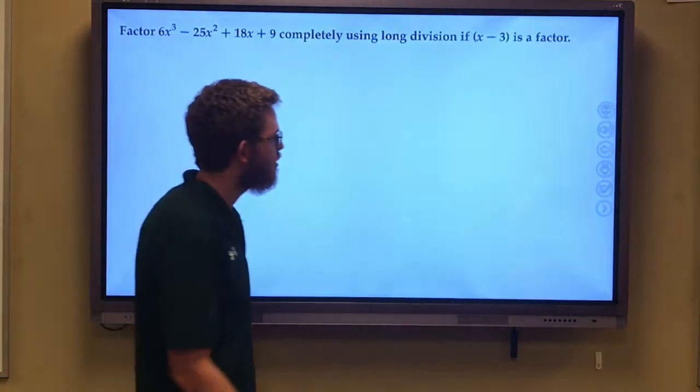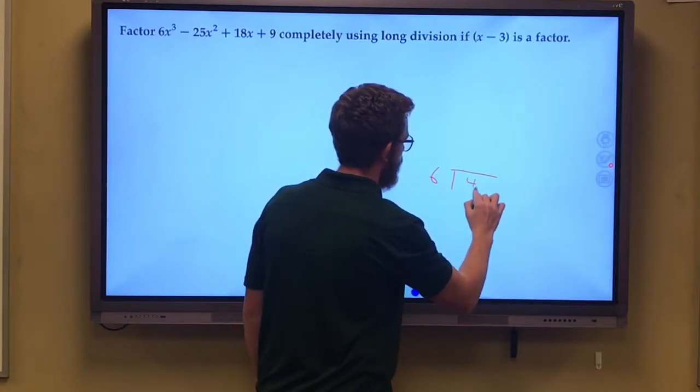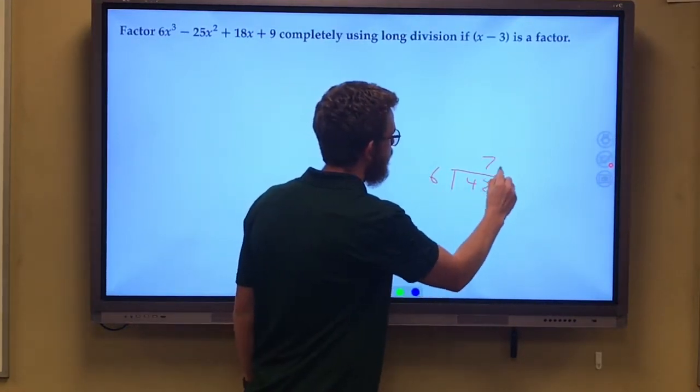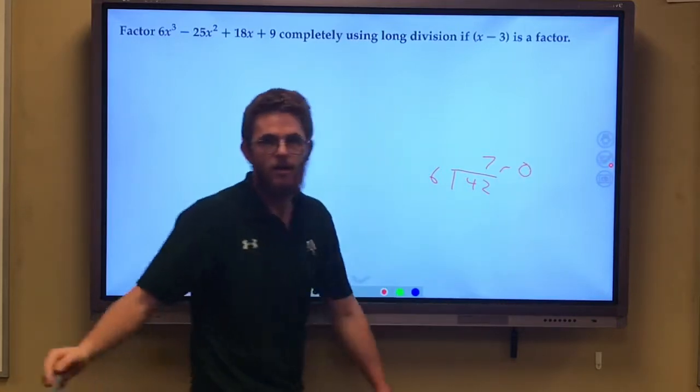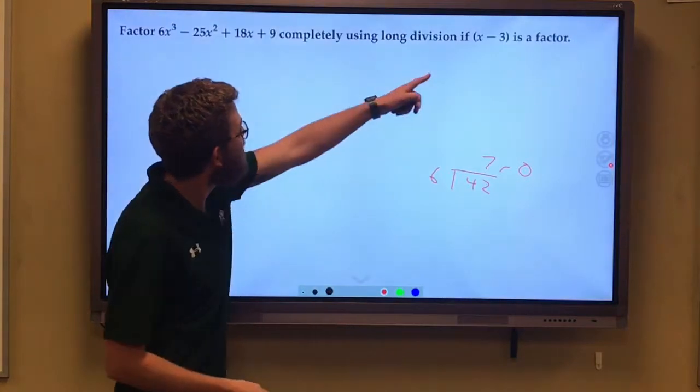Well, how do we know if something is a factor? How do we know that 6 is a factor of 42? That we can divide 42 by 6 evenly with a remainder of nothing. That is what we're going to check here first. Is this a factor?